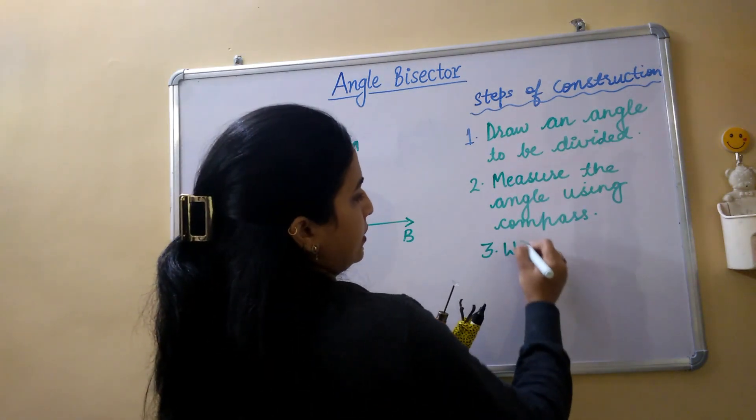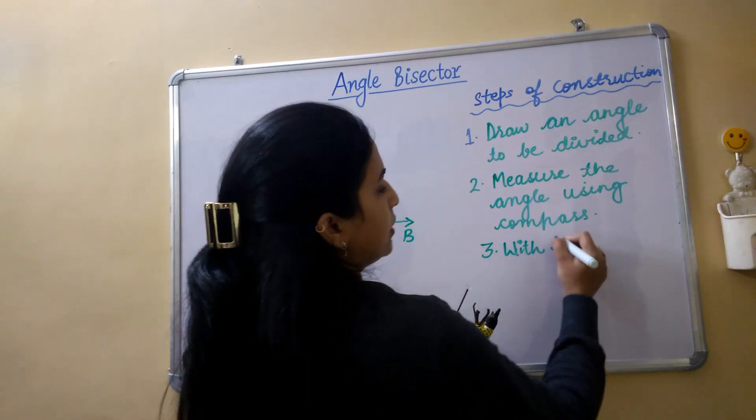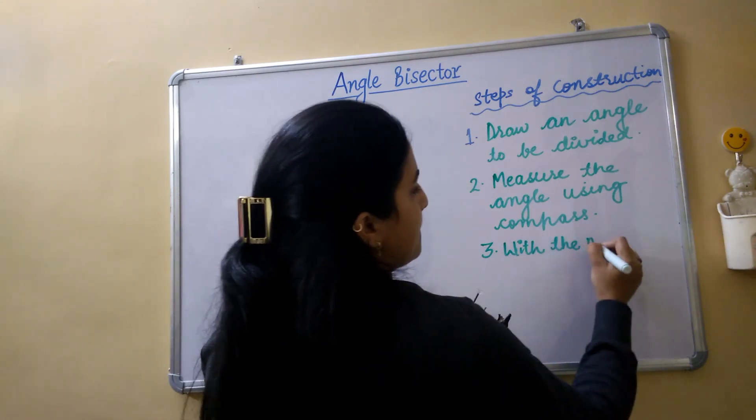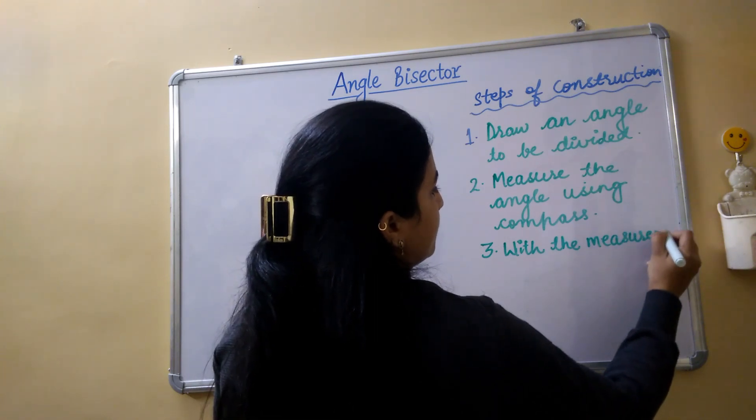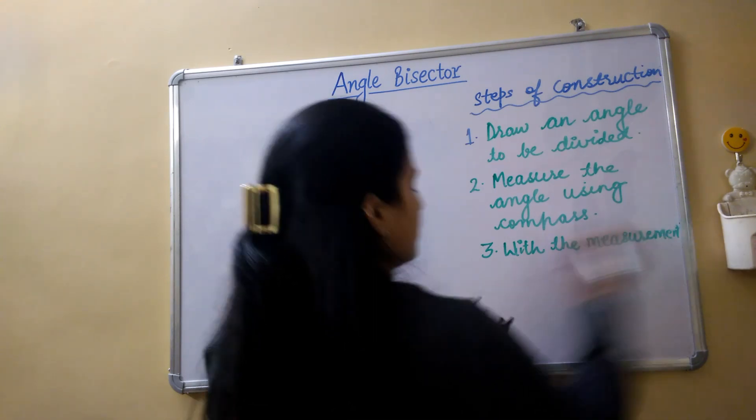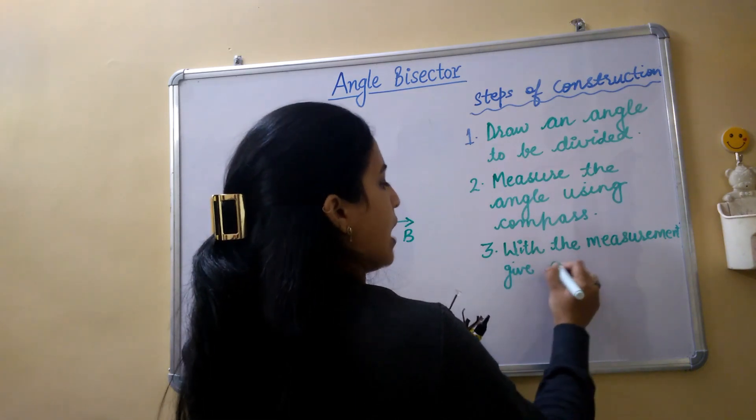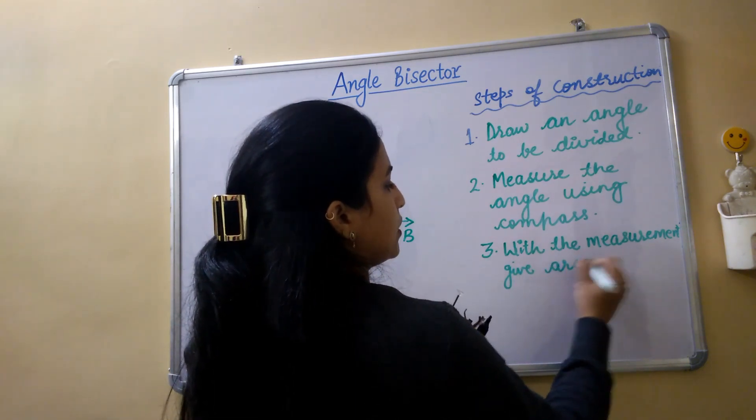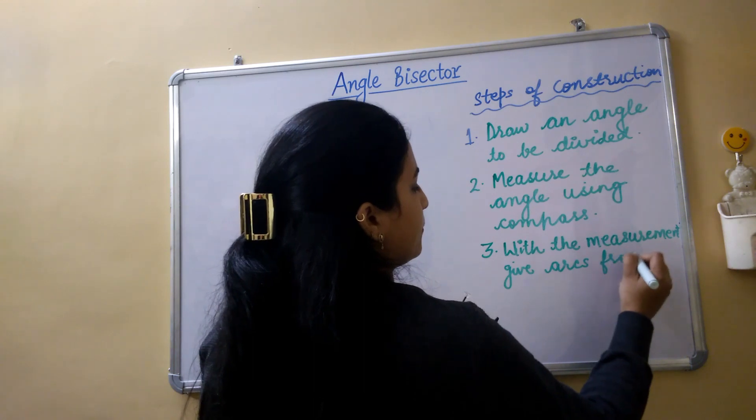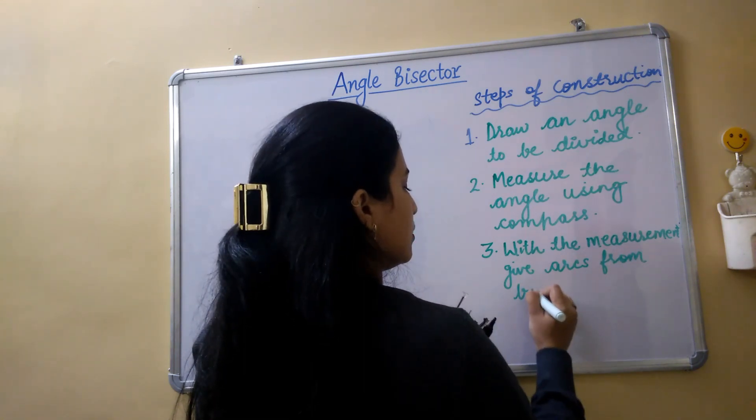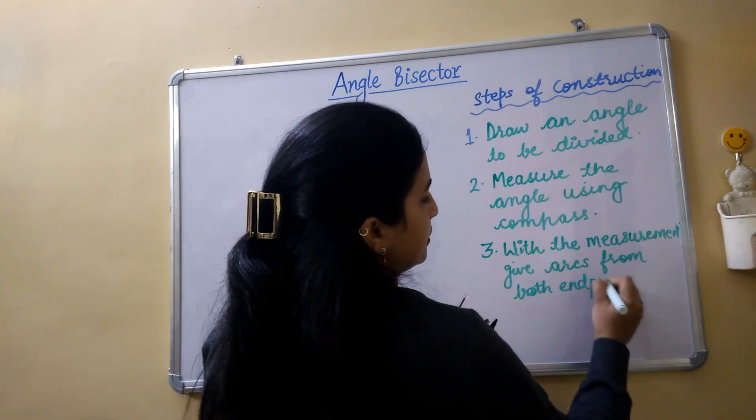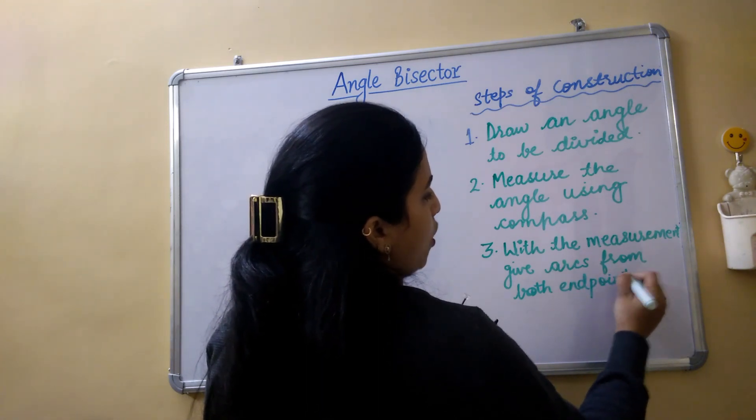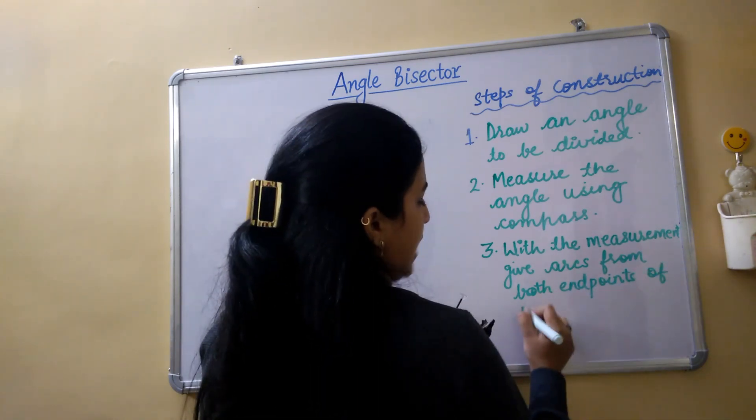So here we got two arcs which have cut together. So third step of construction would be with the measurement, give arcs from both endpoints of the angle.